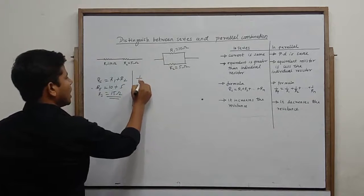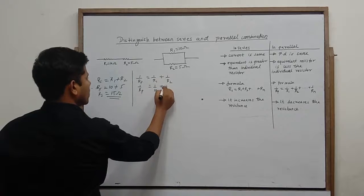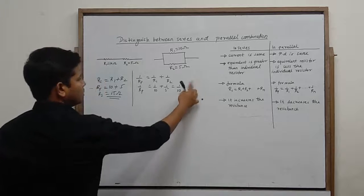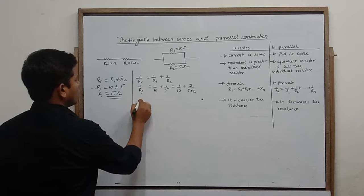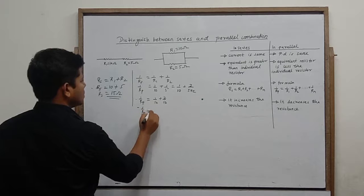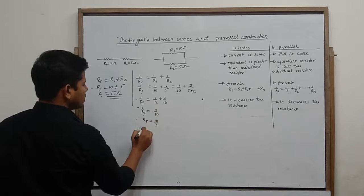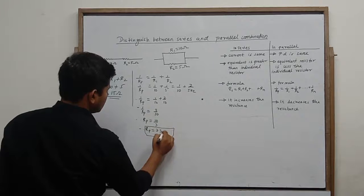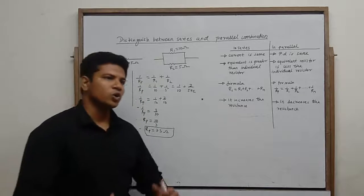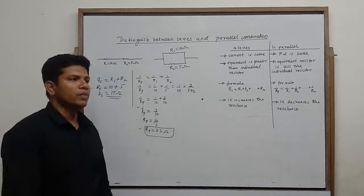For the parallel connection, the formula is: 1 upon Rp equals 1 upon R1 plus 1 upon R2. That gives us 1 upon Rp equals 1 upon 10 plus 1 upon 5, which equals 1 upon 10 plus 2 upon 10, giving 3 upon 10. Therefore Rp equals 10 upon 3, which is approximately 3.3 ohms.